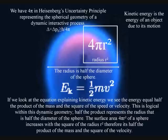This is logical within this dynamic geometry. Half the product represents the radius that is half the diameter of the sphere. The surface area of a sphere increases with the square of the radius therefore it's half the product of the mass and the square of the velocity.